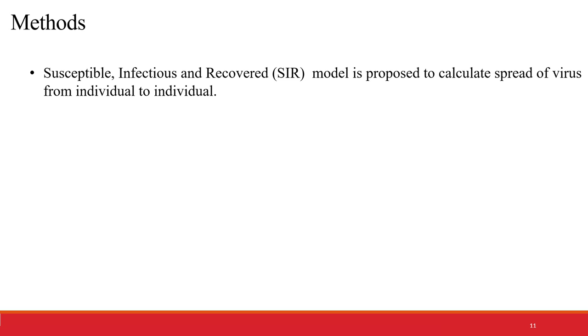For this project, the SIR model is used - that is, Susceptible, Infectious, and Recovered model. This model is able to measure transmission of disease from human to human. According to this model, the number of people infected follows a Poisson distribution. The equation of expected value, lambda, is as shown in the slide.